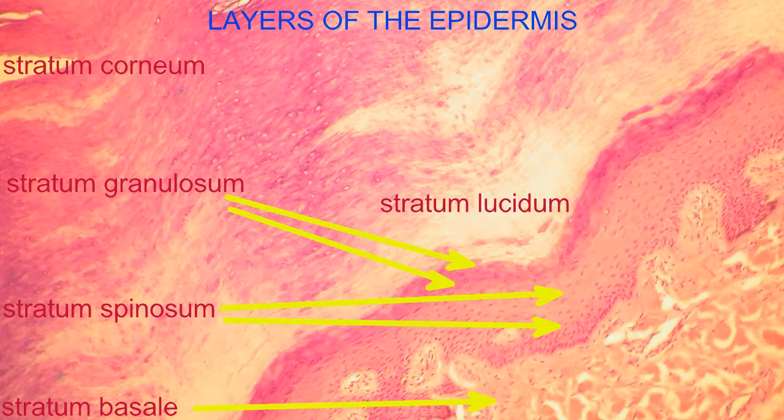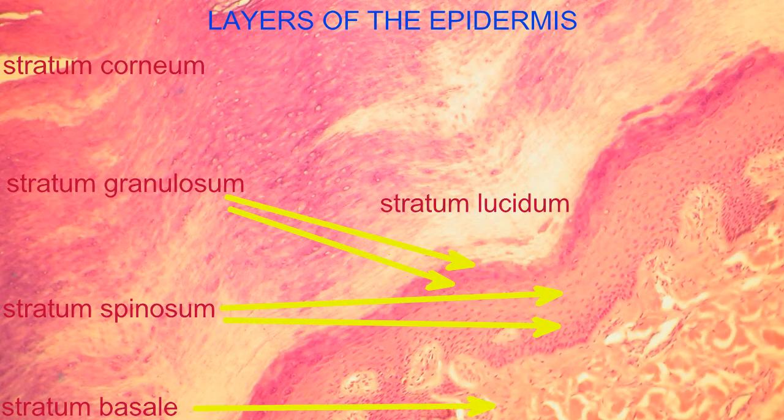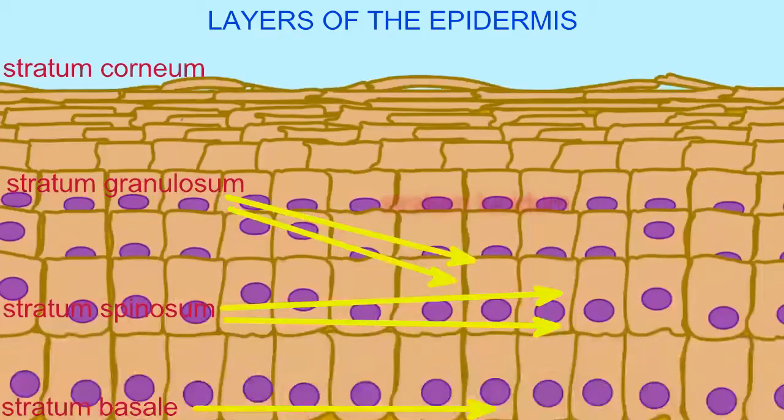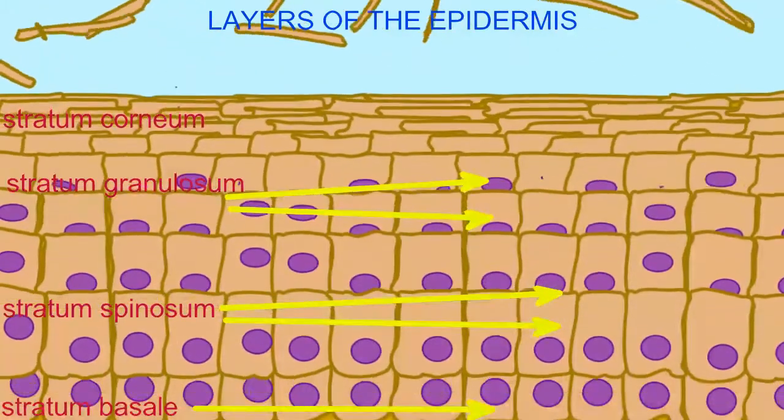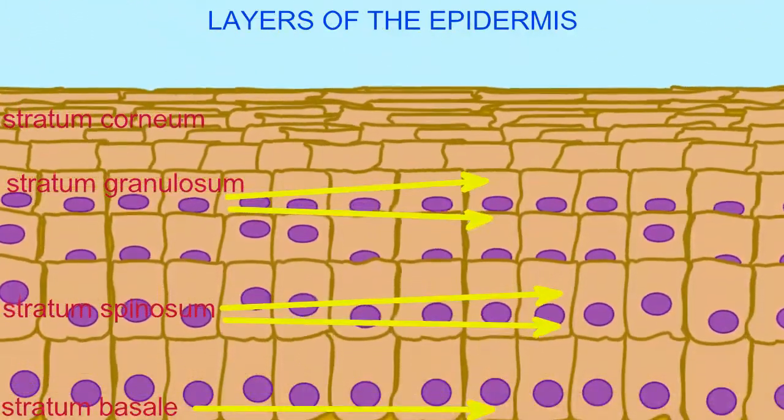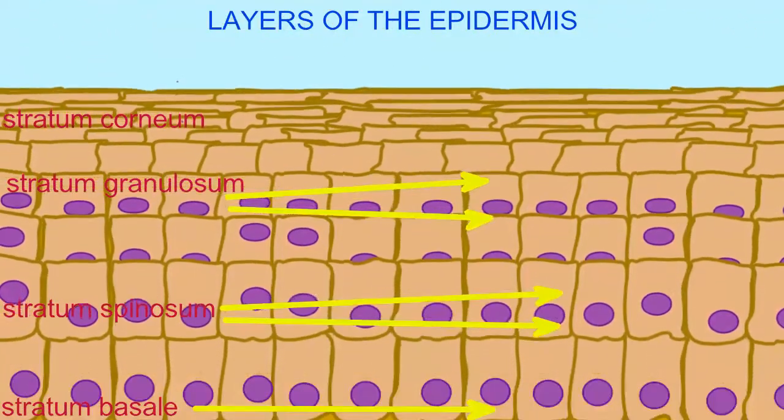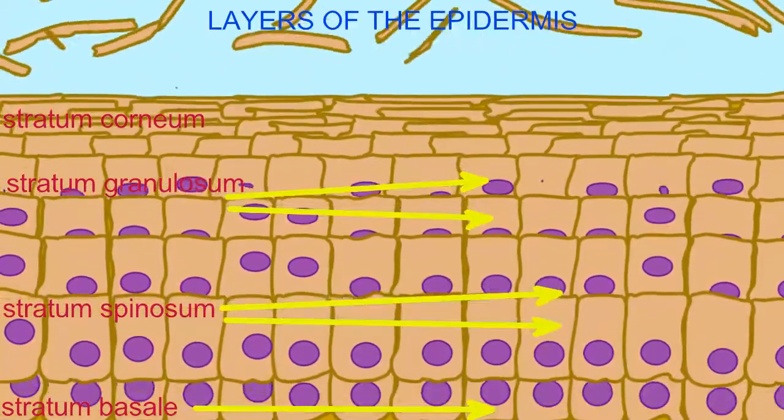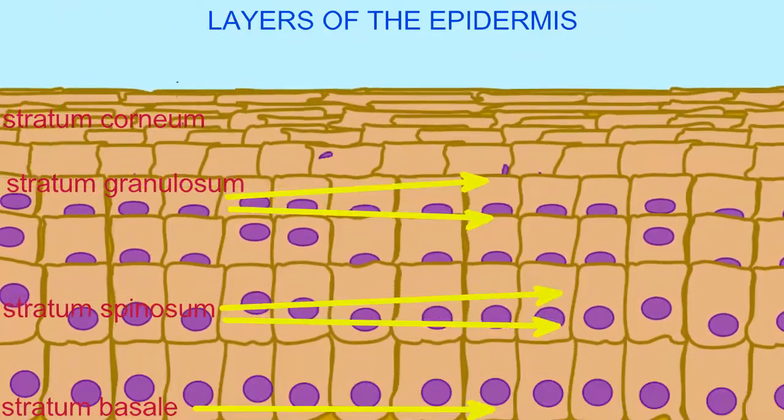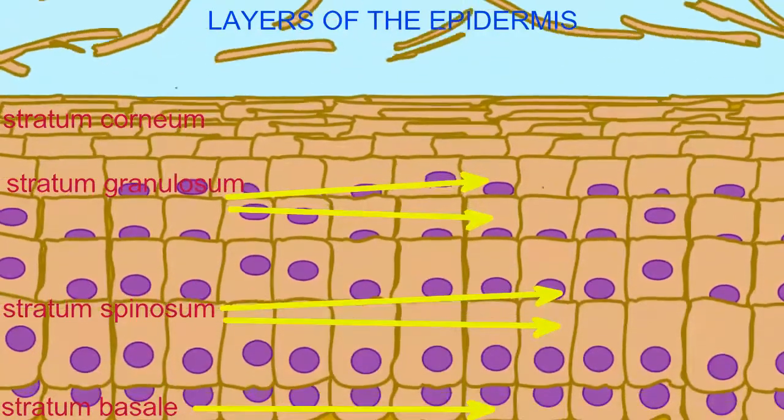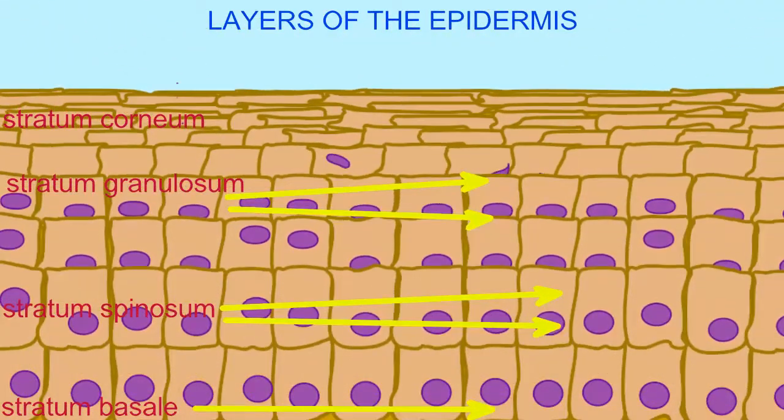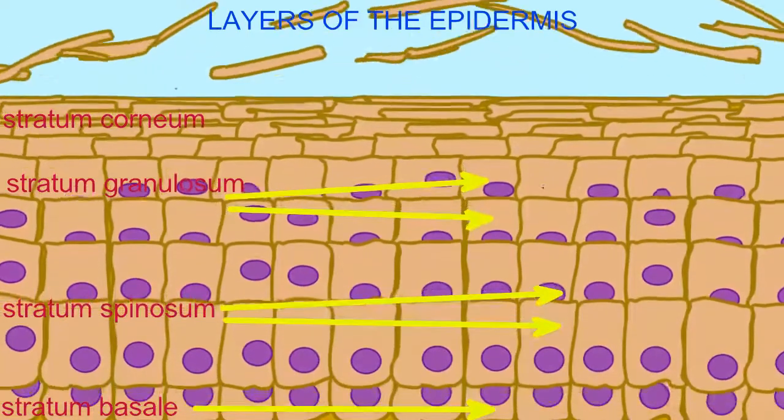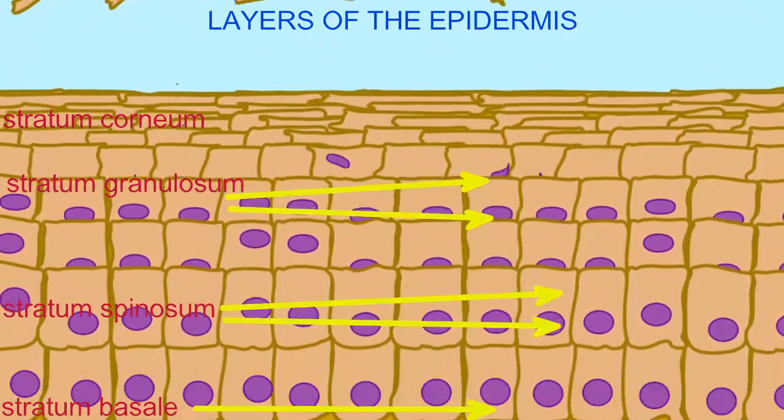And by the time cells have reached the final layer, the stratum corneum, they are dead, flat cells without nuclei, which then are very effective in preventing water loss and protecting our bodies from invasion from the bacteria seeking water-filled, moist living cells, because these are dry, dead cells.